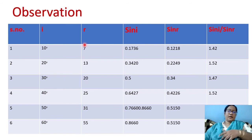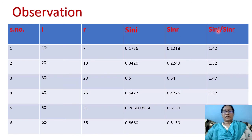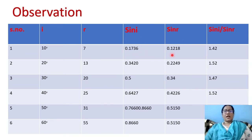See exactly the difference in this activity. When I equals 10 degrees and R equals 7 degrees: sin I = 0.1736, sin R = 0.1318, and sin I by sin R = 1.42.